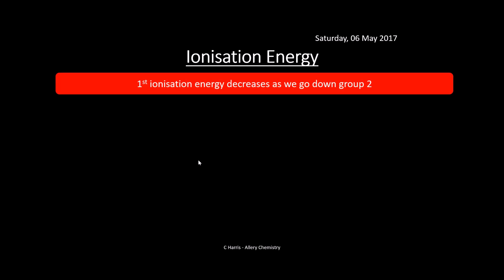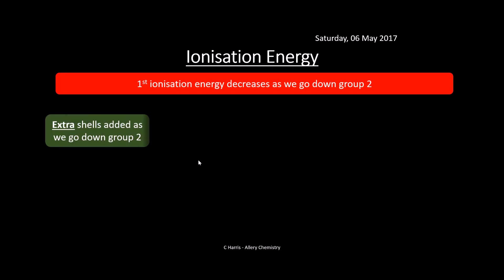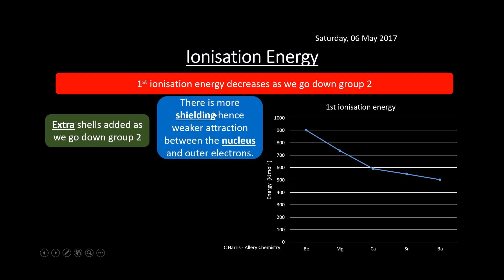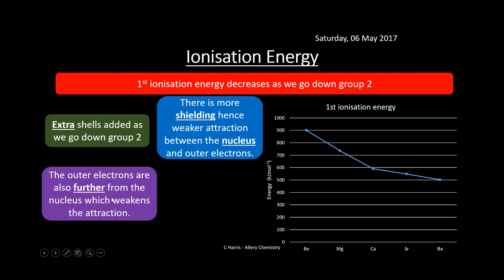The first ionization energy decreases as we go down the group. Here's the graph. This is because we add extra shells as we go down the group, which leads to shielding. There's more shielding, hence we get a weaker attraction between the nucleus and the outer electrons, so as we go down Group 2 the first ionization energy gets lower because of shielding.